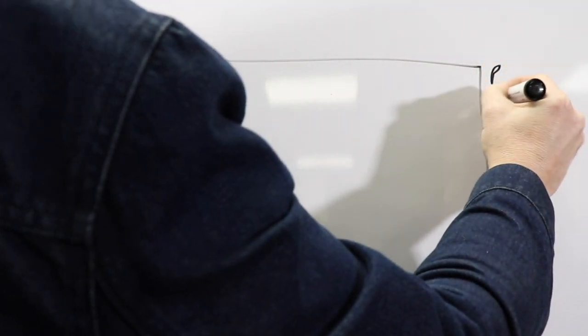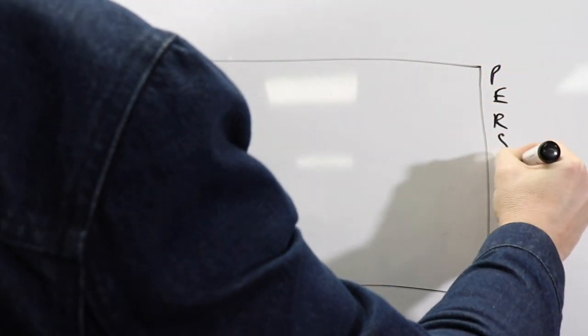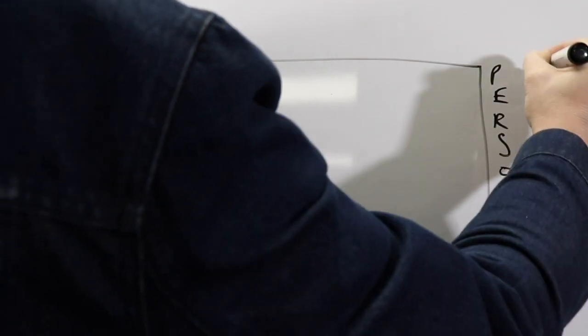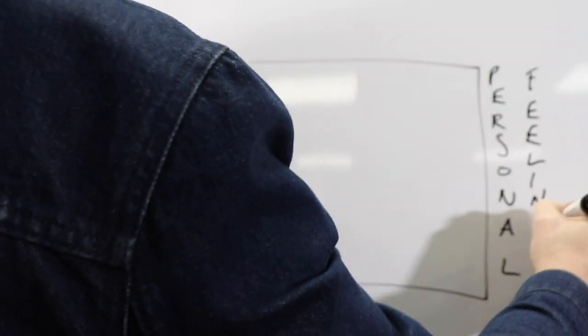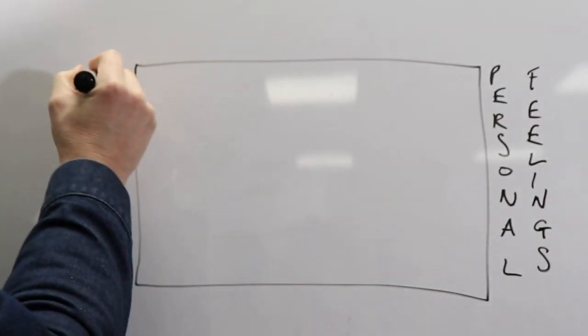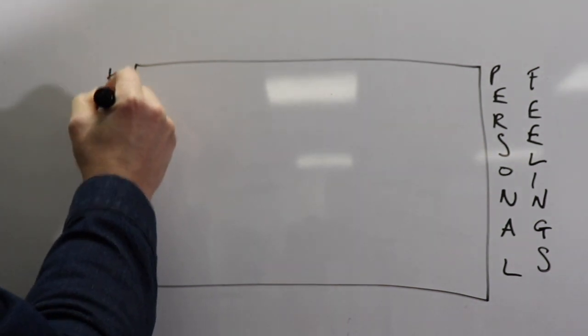Now opinions can consist of personal feelings and knowledge. On the right hand side of the rectangle, if our opinions lie more to the right, that's an opinion consisting mostly of personal feelings. If it's on the left hand side, that's an opinion consisting mostly of knowledge.